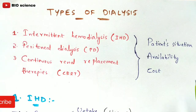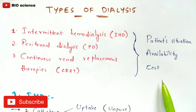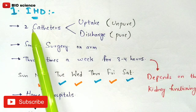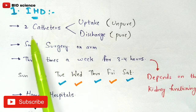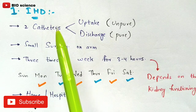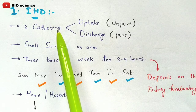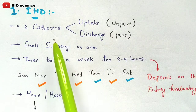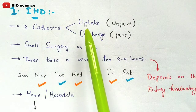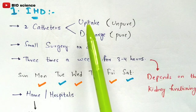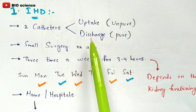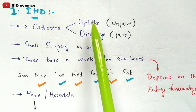Coming to the first type — Intermittent Hemodialysis. In this process, two catheters are used. One catheter is fixed to the arteries and another to the veins. One catheter extracts the blood and the other discharges it.